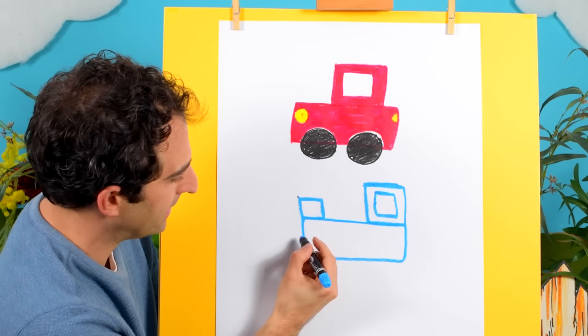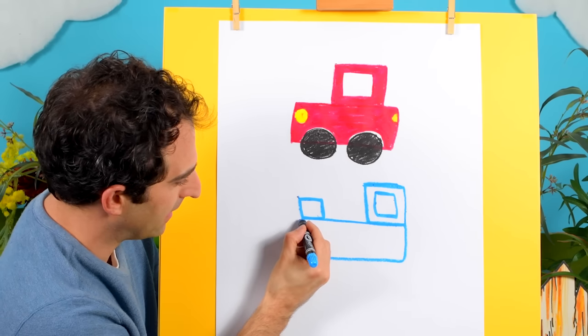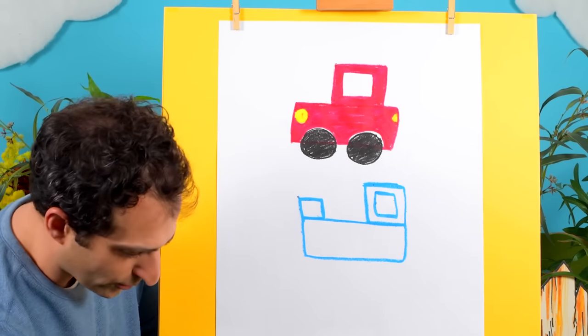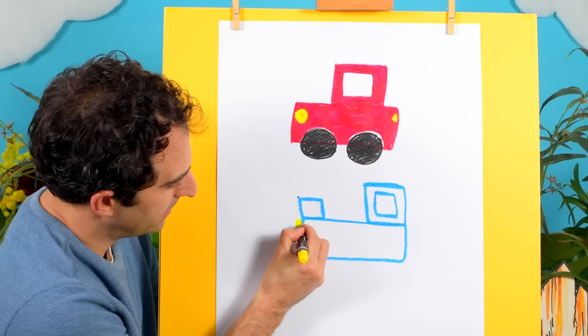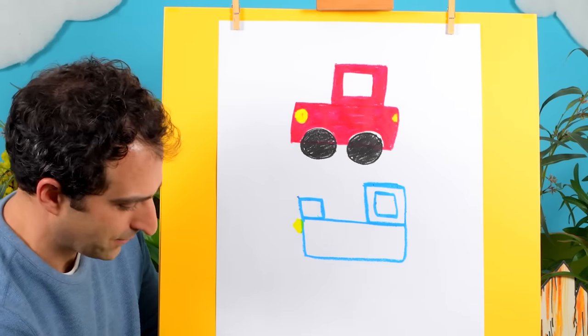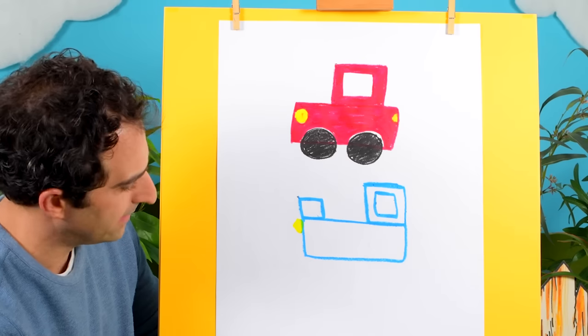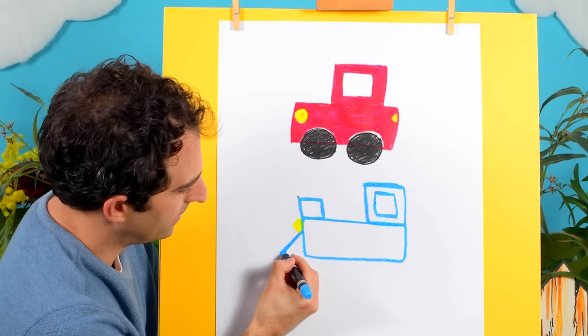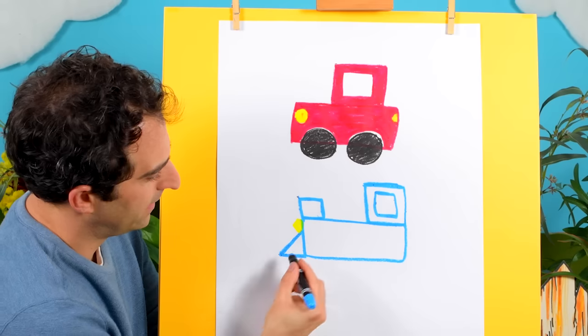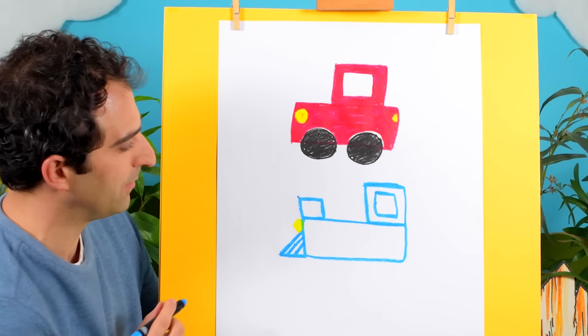And we can add some details, like a little light at the front. Maybe we'll use our yellow crayon. And we can draw that in there. And we can put the front of the train, which is a point. And put some lines in there.